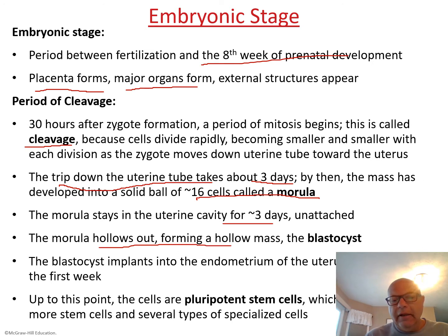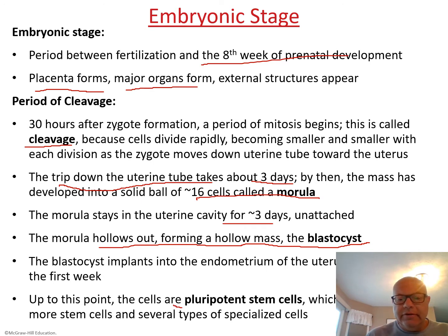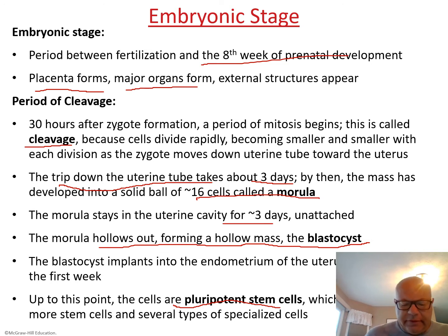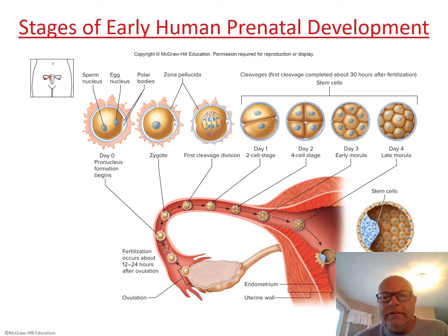The morula starts to hollow out and becomes a hollow ball of cells called a blastocyst. It is the blastocyst that will implant into the endometrium within the first week. At this point the cells are pluripotent stem cells, meaning they will end up becoming different types of cells.